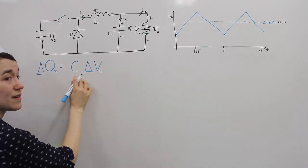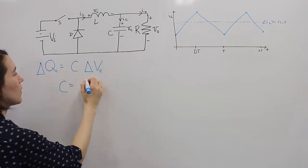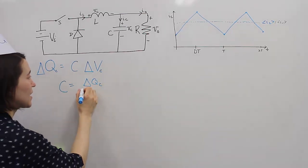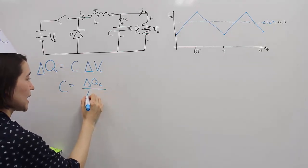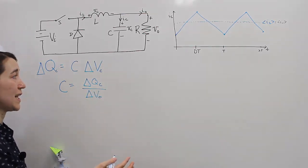So if we want to calculate for C, all we have to do is figure out the change in the charge that we expect and divide it by the change in the output voltage, the maximum acceptable output voltage change.